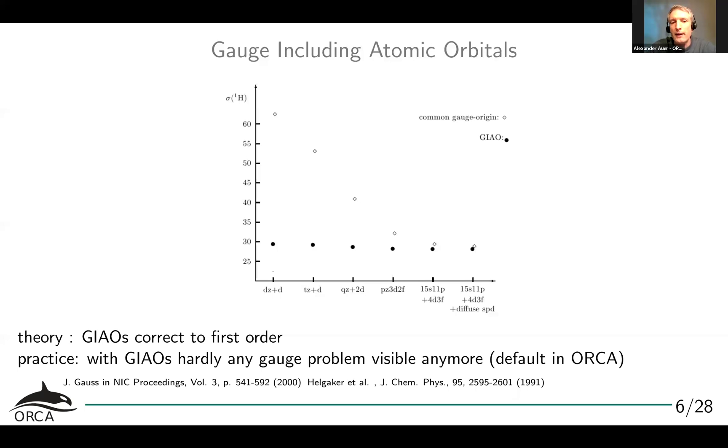Now I mentioned this gauge origin dependence, and the solution is called gauge including atomic orbitals, GIAOs. This is default in ORCA. You should be aware of this, because if you don't use specific machinery for calculating chemical shifts, your basis set convergence will be very, very slow. This is a typical example where you calculate proton chemical shifts for hydrogen fluoride. Even if you go to very large basis sets, you still have very large deviations. If you use these GIAOs, then small basis sets will already basically give you converged results. So this is default in ORCA and any use GIAOs unless you specifically ask for other gauge origins.